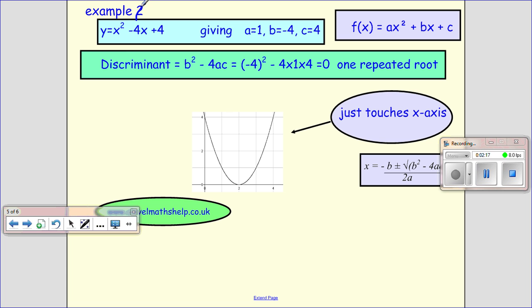And my third example, sorry, that should be a 3, is here, x² - 4x + 4. Again, we compare it. We find our a, b's, and c's. We put it in our discriminant, b² - 4ac. Work it out,